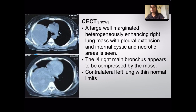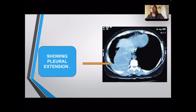A contrast-enhanced CT scan was performed which showed a large, well-defined, well-marginated, heterogeneously enhancing right lung mass with definite pleural extension. Internal cystic and necrotic areas were also present.